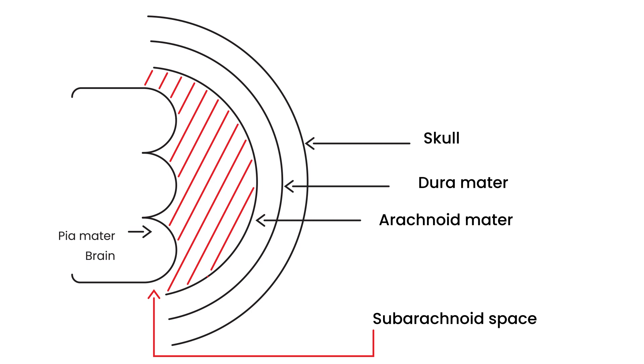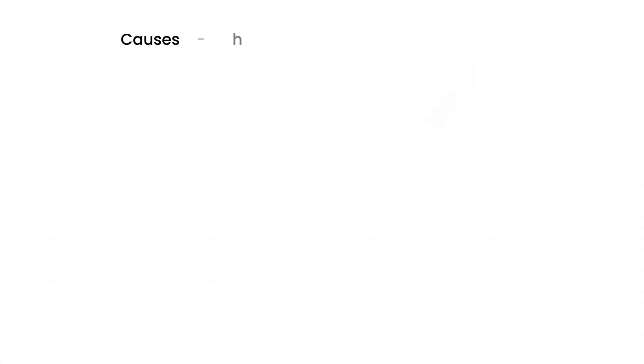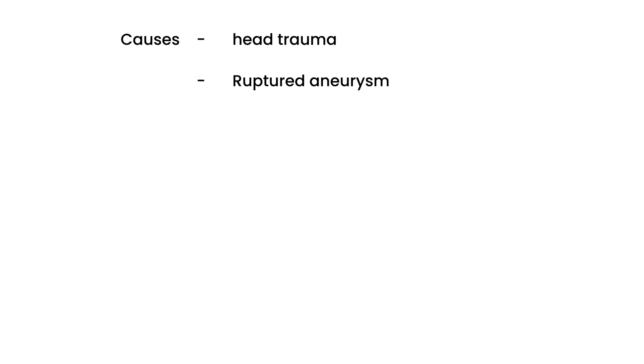What are the causes? Why does this happen? There are a couple of reasons. The first is head trauma — a person with head trauma can definitely develop a subarachnoid hemorrhage. But another really common cause is ruptured aneurysms, which can account for up to 85% of cases.